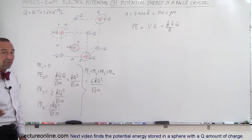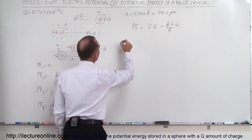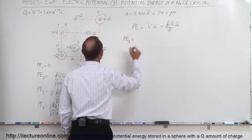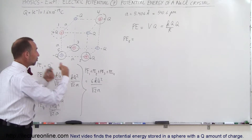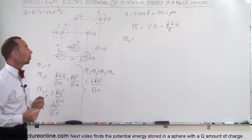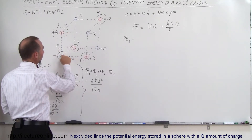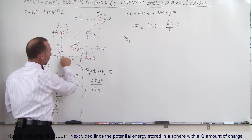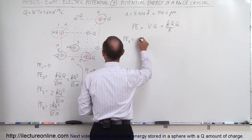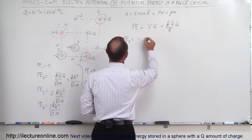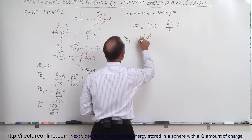What about the negative charges? Now let's start adding the negative charges. Let's start with this one here — the fifth charge. A negative charge wants to be close to positive charges, so there will be a force of attraction and negative potential energy. Notice the distance between this charge and each of the three positive charges is simply A, so we have minus three KQ squared divided by A.